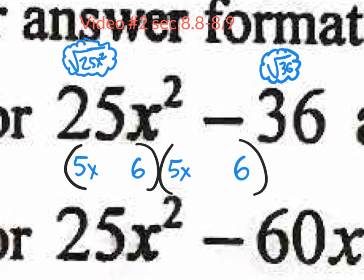Let's say we did put a negative and negative. What would I get when I go 5x times 5x? I'd get 25x squared. But 5x times negative 6 gives negative 30x, and negative 6 times 5 gives another negative 30x — they do not cancel out. Since it's a binomial, not a trinomial, I want the middle term to cancel out. The only way the middle term cancels out is if you have different signs — one negative and one positive. So that's how we know one has to be a minus and a plus.